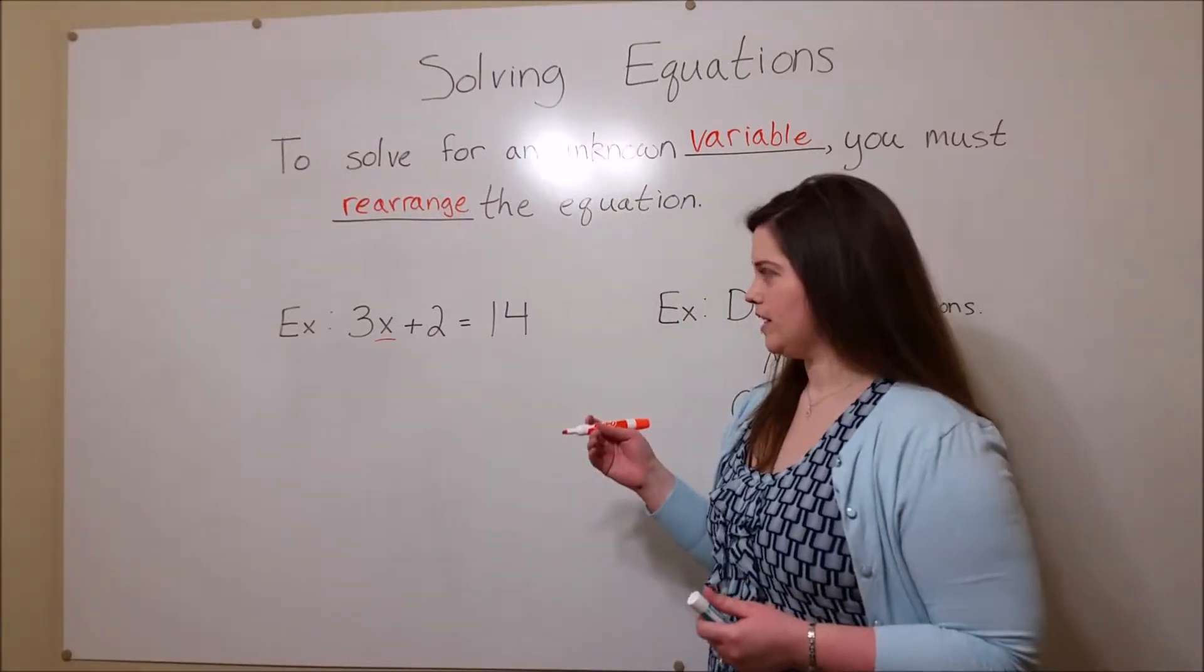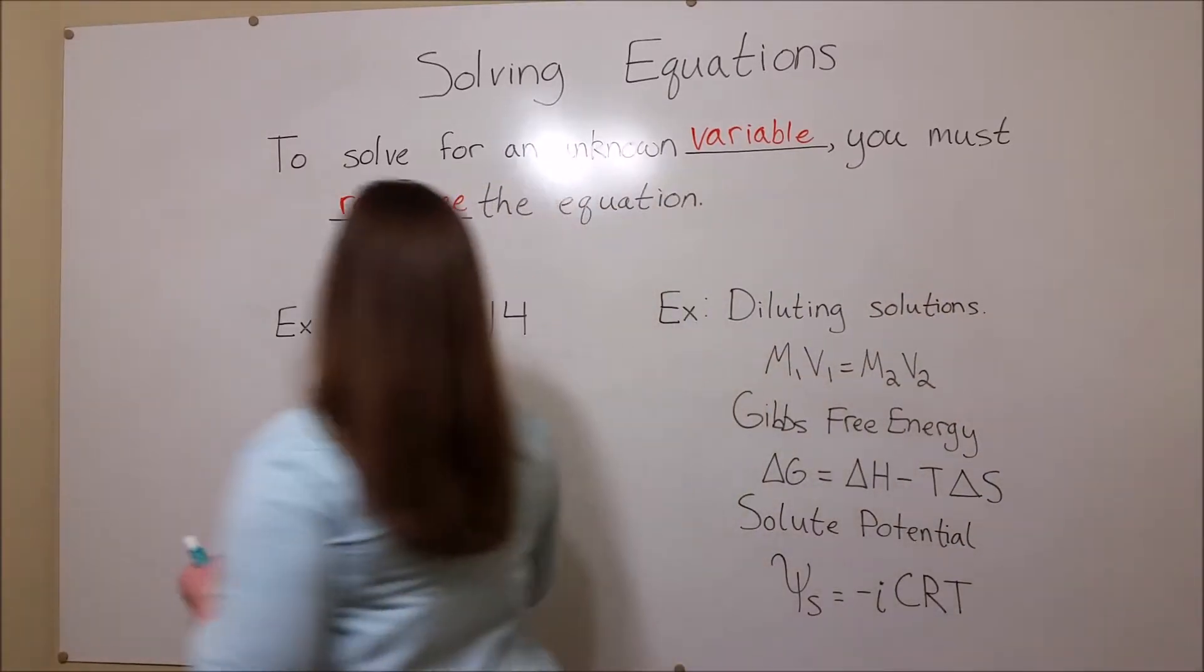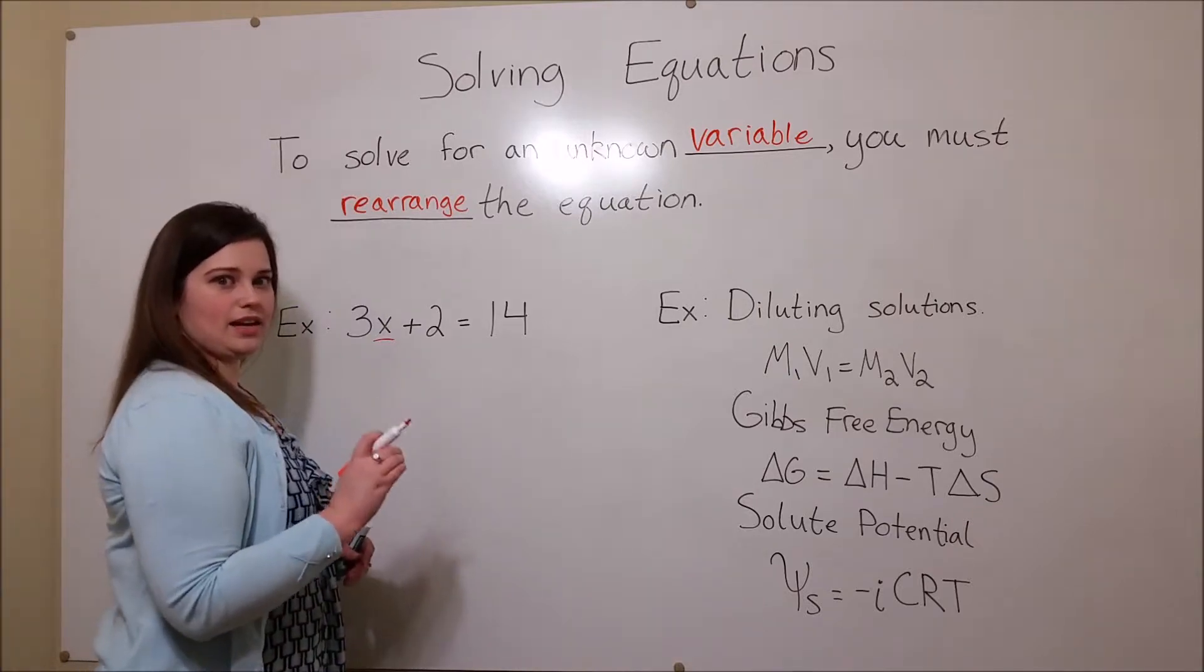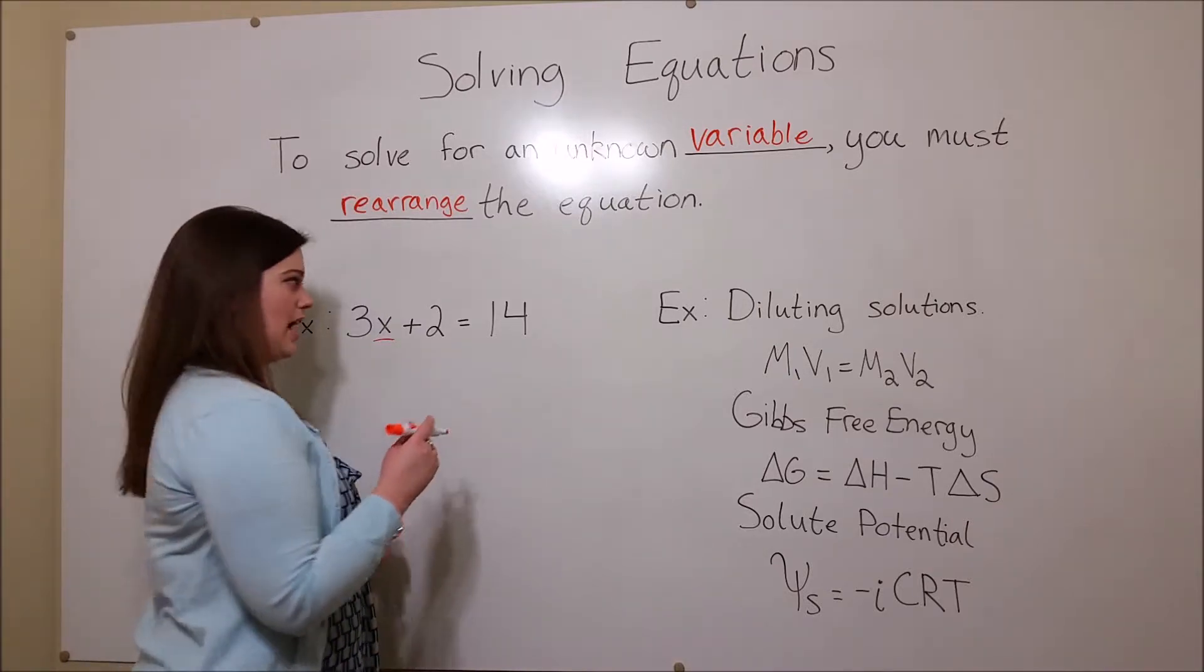We do this by isolating the variable. That is, making it to where the variable is the only thing on one side of the equal sign.